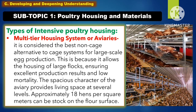Another type of intensive poultry housing is the multi-tier housing system or the aviary. It is considered the best non-cage alternative to the cage system for large-scale egg production. This is because it allows the housing of large flocks, ensuring excellent production results and low mortality. The spacious character of the aviary provides living space at several levels. Approximately 18 hens per square meter can be stacked on the floor surface.